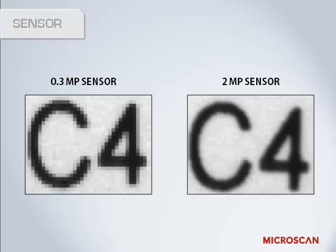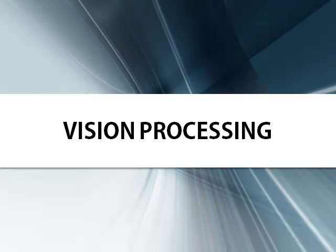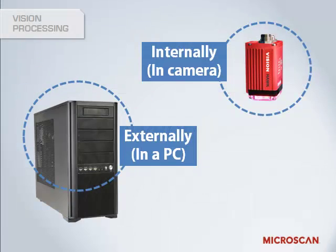The size of your parts, tolerances, and other application parameters will dictate your required resolution. The next step is vision processing. The processing function is truly at the core of machine vision, the mechanism for extracting the information that is required of an application.